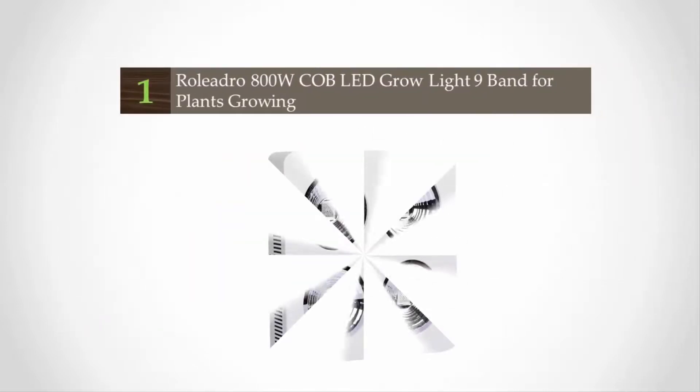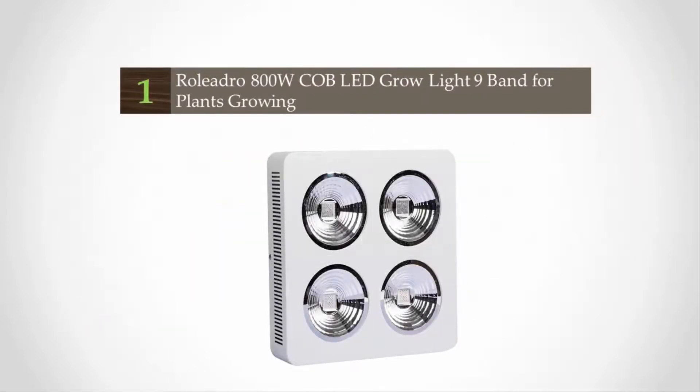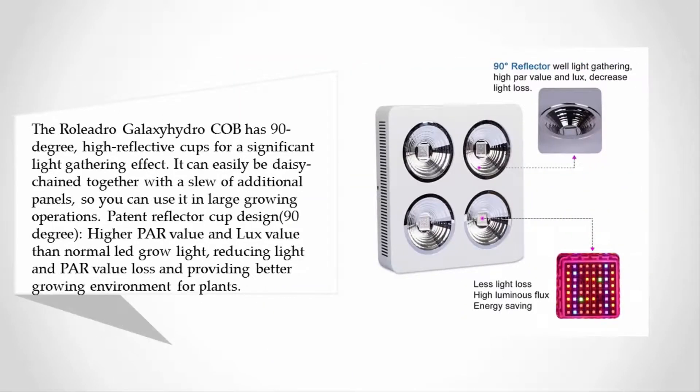Coming in at number one of our list, the Raleedro Galaxy Hydro COB has 90 degree high reflective cups for a significant light gathering effect. It can easily be daisy chained together with a slew of additional panels so you can use it in large growing operations. Patent reflector cup design provides higher PAR value and lux value than normal LED grow lights, reducing light and PAR value loss.